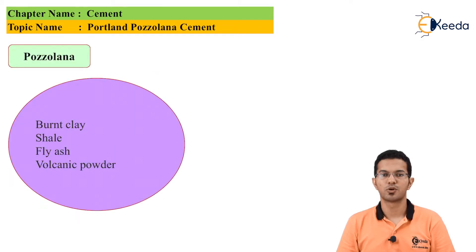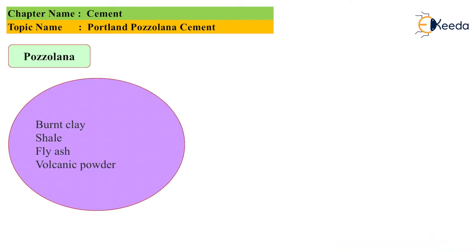Some pozzolana materials are given here. They are burnt clay, shale, fly ash, and volcanic powder.